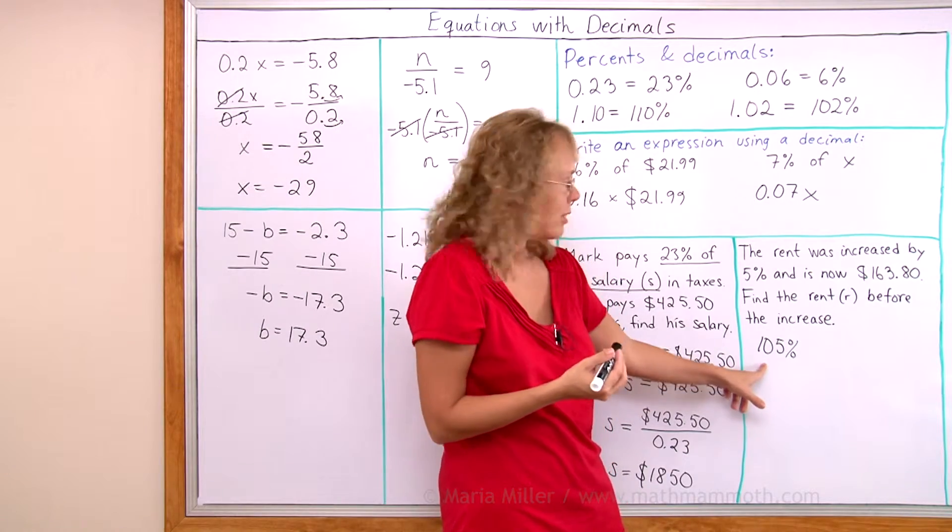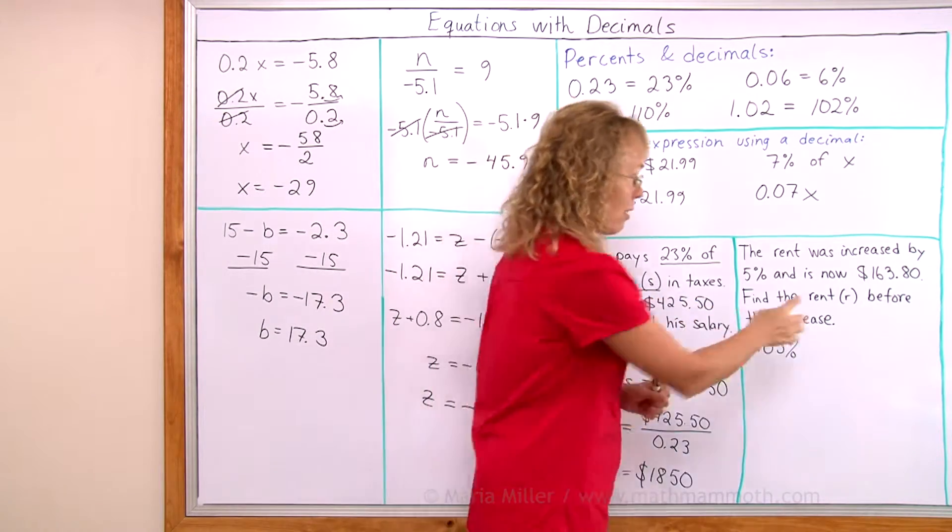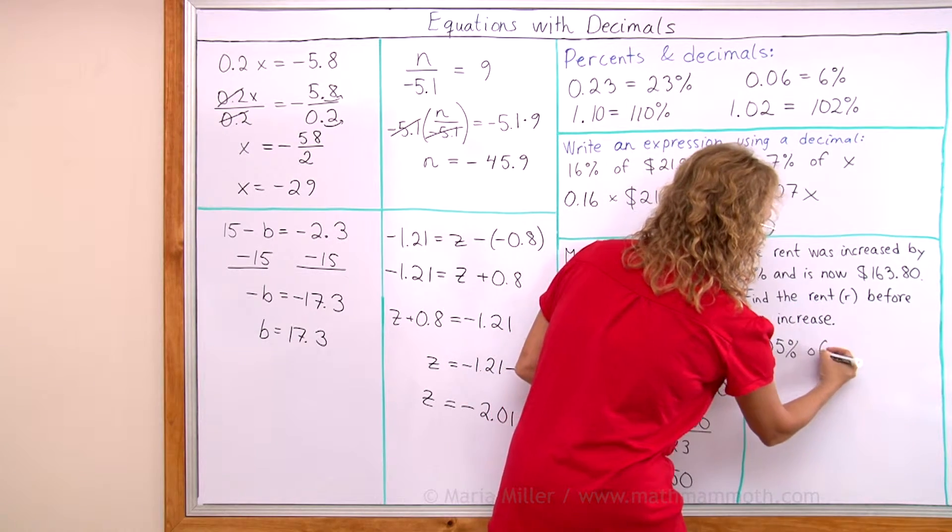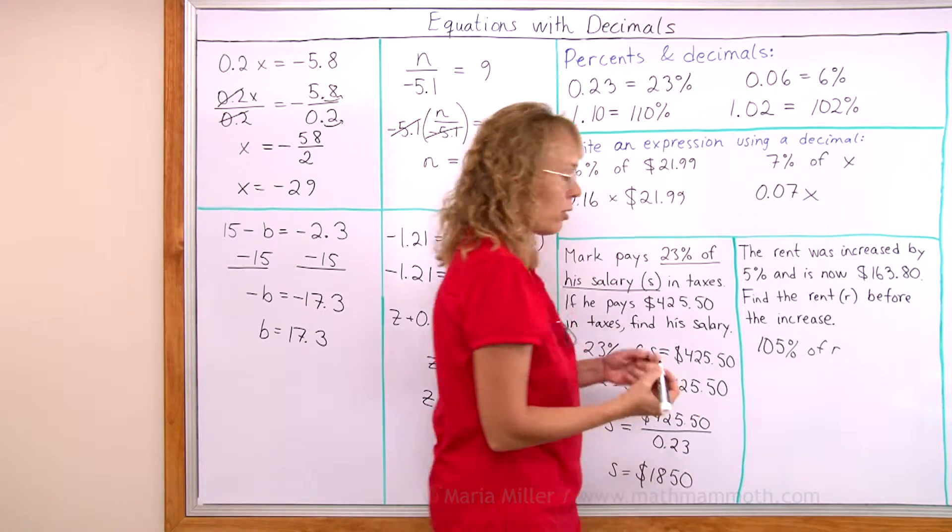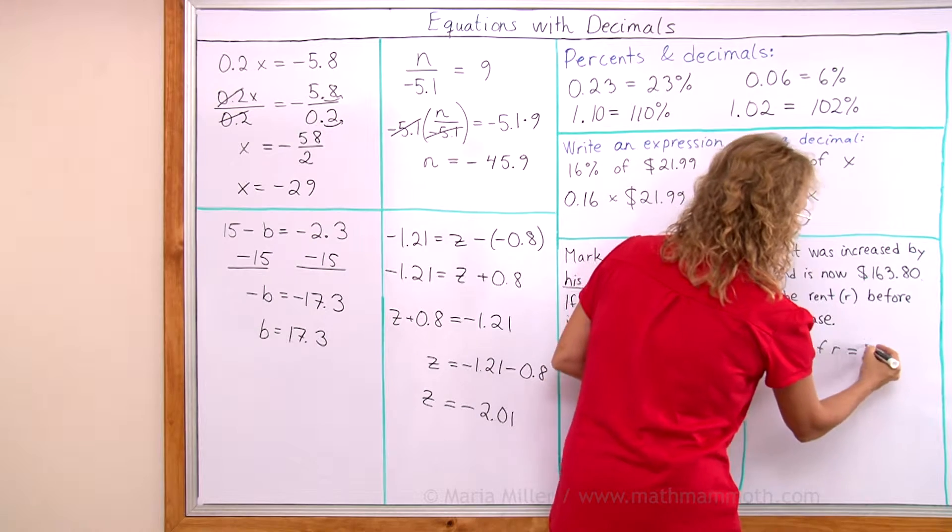And what was it? Well, we don't know that. We have a variable for it. The R is the rent. So 105% of the rent, the original rent, is this number here.